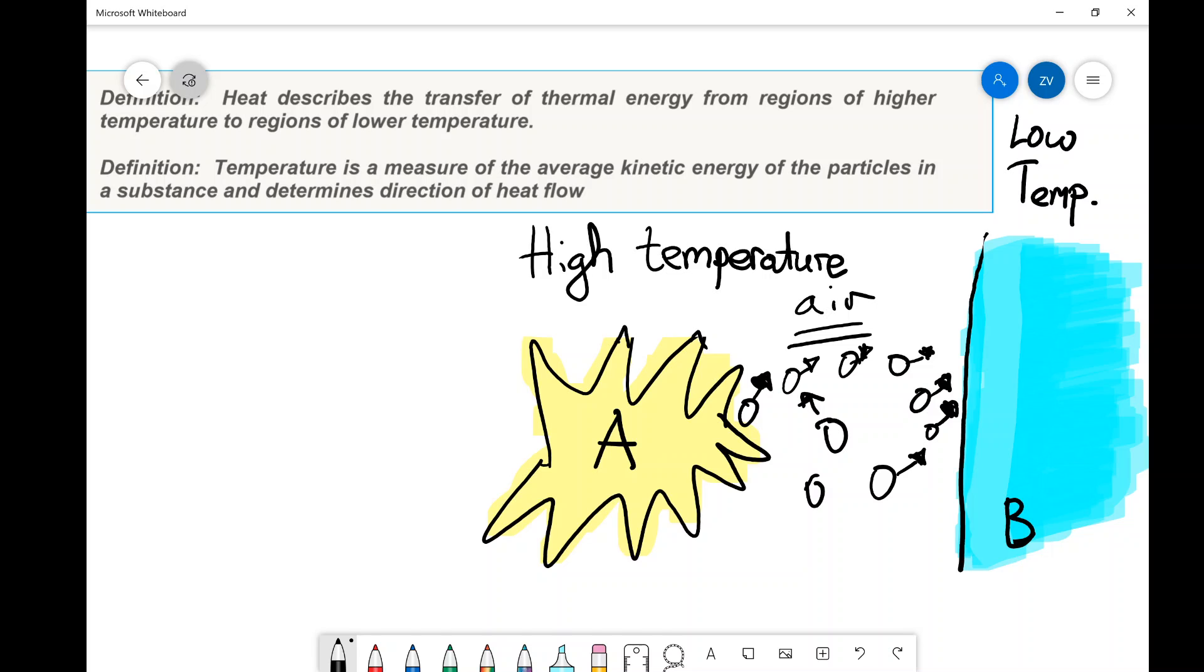Once again, heat describes the transfer of thermal energy from regions of high temperature to regions of lower temperature, and temperature is just a measure of the average kinetic energy of those particles. So if one of those particles has a kinetic energy, a half m v squared, if you increase the speed of those particles by putting more energy into the system, the energy will also increase.